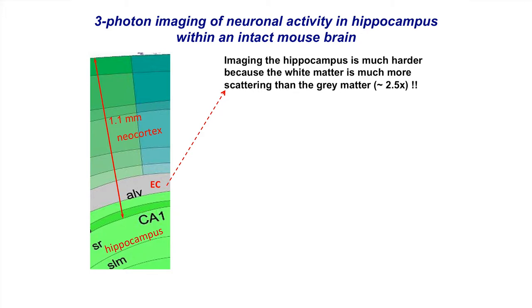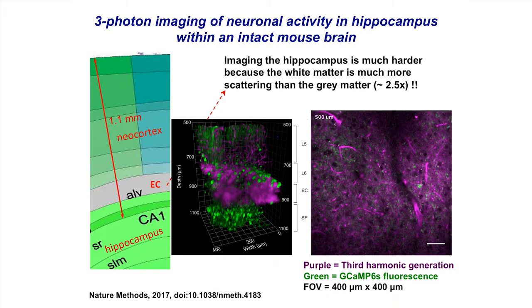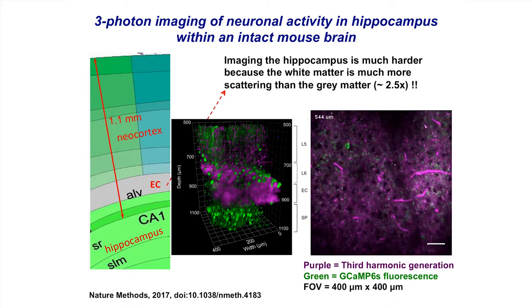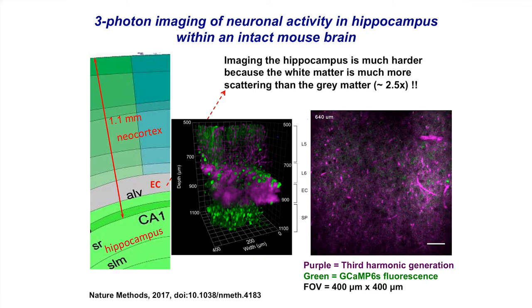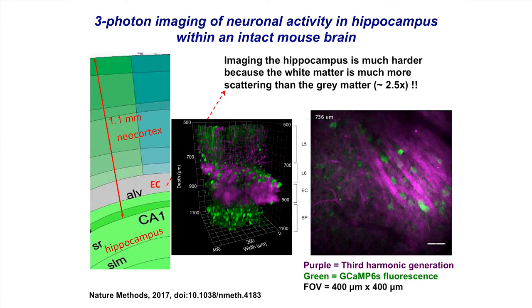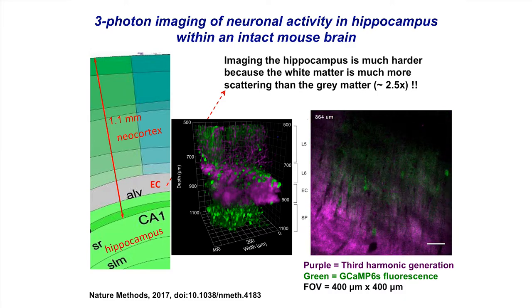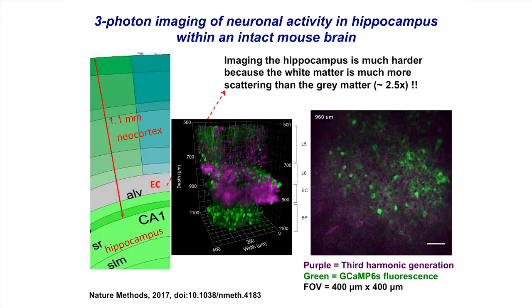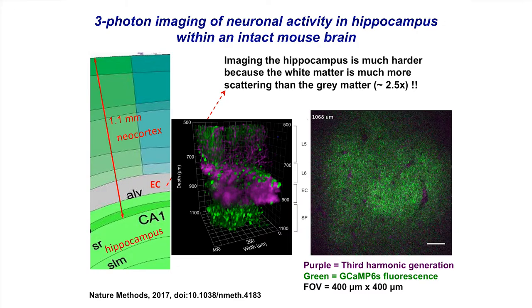Going deeper than the cortical column means passing through the external capsule white matter, which is about 2.5 times more scattering than gray matter. Three-dimensional reconstructions show the white matter as purple third harmonic generation of myelin, and then the hippocampus CA1 region with GCaMP-labeled neurons. By scanning the same neuronal layer at high speed, we can watch neuronal activity in the mouse hippocampus in vivo — the movie is sped up by a factor of 60.